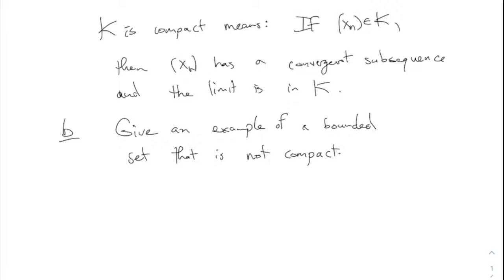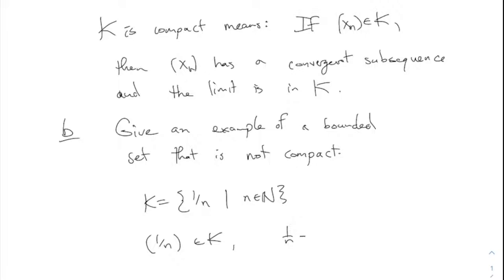Someone said 1/n — I agree with that. Why is it not compact? It's not closed, that's true. In these terms, because there's a sequence in here, like the sequence 1/n, it converges to 0 but 0 is not part of this set. So the sequence 1/n is in K and 1/n converges to 0, but 0 is not in K. This is a bounded set that is not compact.